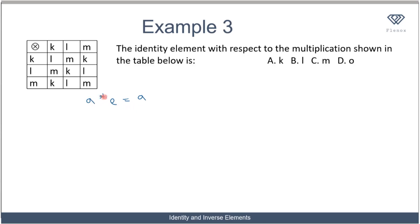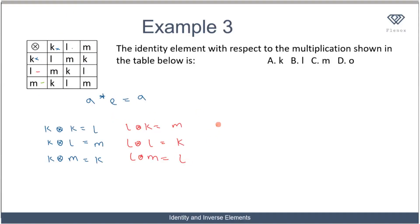It means that when I have a variable a and star the identity element, it must equal that variable a. Let's convert the binary operations in the multiplication table to the operation. Starting with k: k★k equals l, k★l equals m, and k★m equals k.